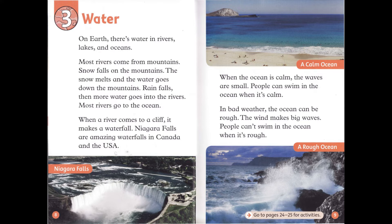When the ocean is calm, the waves are small. People can swim in the ocean when it's calm. In bad weather, the ocean can be rough. The wind makes big waves. People can't swim in the ocean when it's rough.